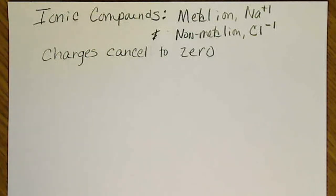The concept for coming up with formulas and names for ionic compounds is that the charges on the ions must cancel to zero.